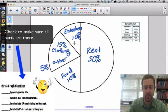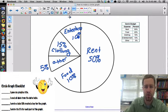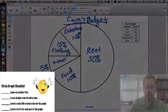So I look in here. I have all my parts labeled. I need to title it Cara's budget. And then I have myself a circle graph.